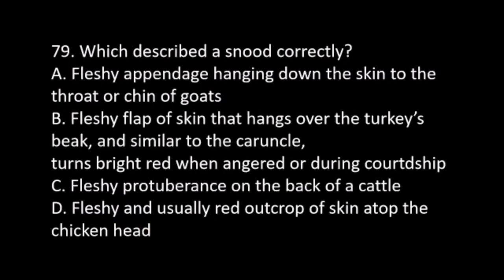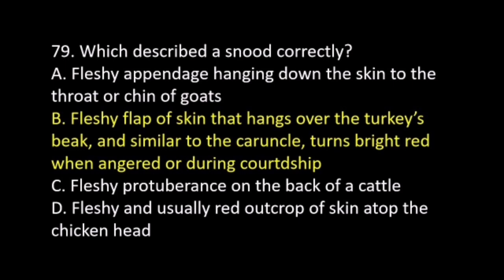Number 79. Which described a snood correctly? A. Fleshy appendage hanging down the skin to the throat or chin of goats. B. Fleshy flap of skin that hangs over the turkey's beak, similar to the caruncle, and turns bright red when angered or during courtship. C. Fleshy protuberance on the back of cattle. D. Fleshy and usually red outcrop of skin atop the chicken head. The answer is B. Fleshy flap of skin that hangs over the turkey's beak, similar to the caruncle, and turns bright red when angered or during courtship.